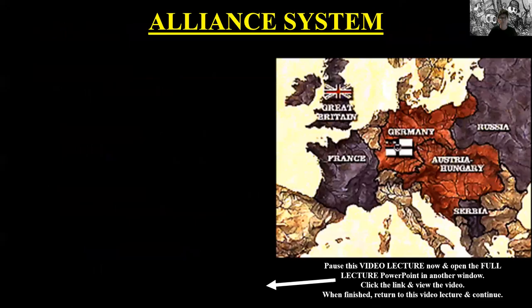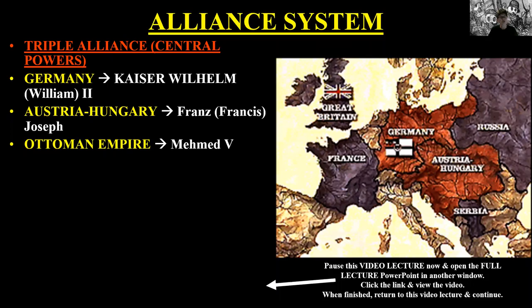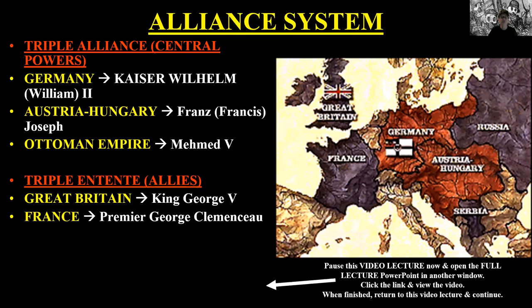In the Central Powers you have Germany, Austria-Hungary, and the Ottoman Empire. In the Allied Powers you have Great Britain, France, and Russia. Germany's Kaiser Wilhelm and Great Britain's King George V were first cousins — both grandsons of Queen Victoria of England. Russia's Tsar Nicholas II was also related to the British royal family, and his wife, the Tsarina Empress Alexandra, was the favorite granddaughter of Queen Victoria. In fact, after her mother died, she spent most of her childhood living at Windsor Castle.